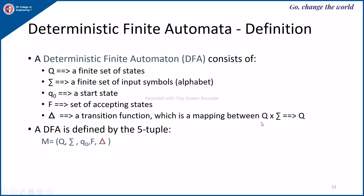The transition function takes a state and an alphabet symbol as input. For every state on every input alphabet, you have a single next state defined in a DFA. You have an ordered pair (Q, A), so delta of Q comma A equals some other state — meaning from a given state, after reading some input alphabet, the machine changes its state.